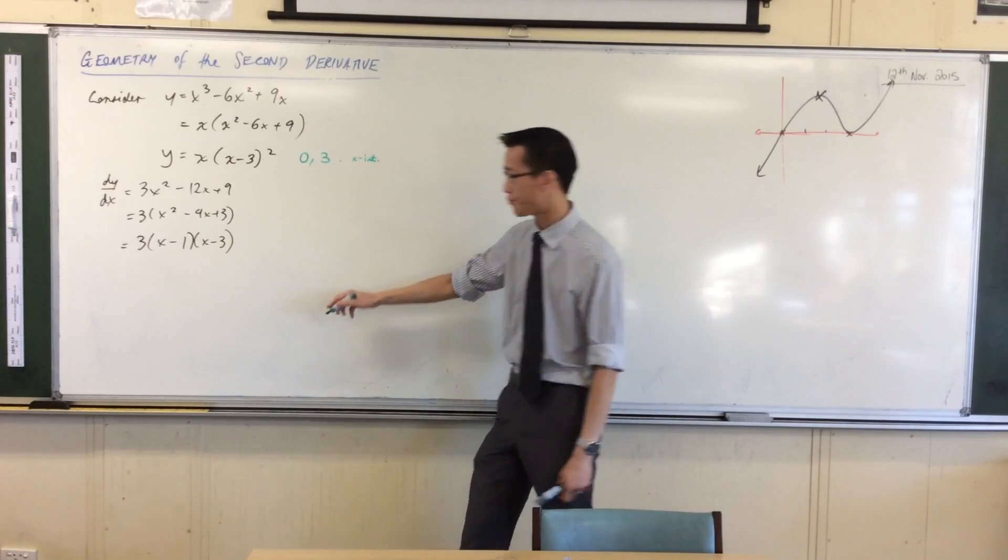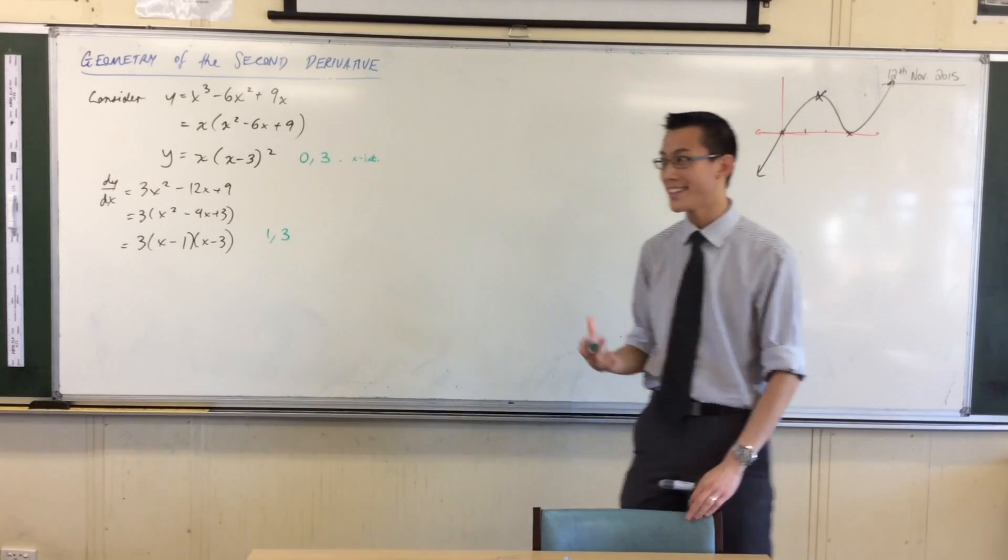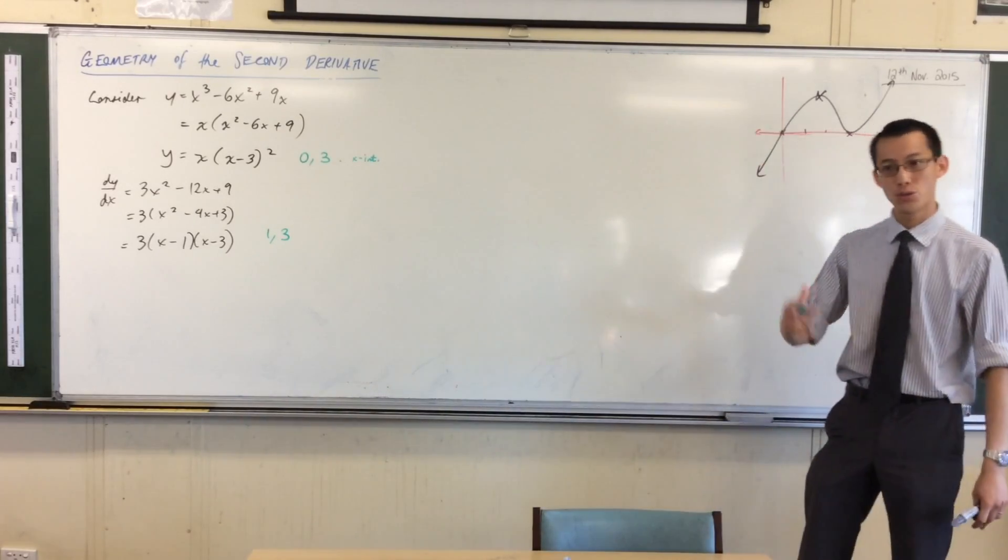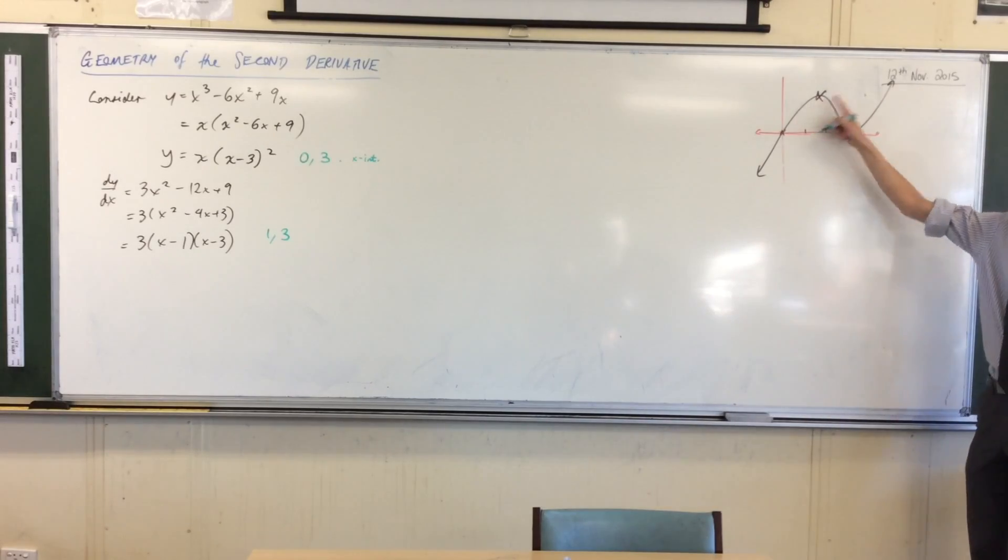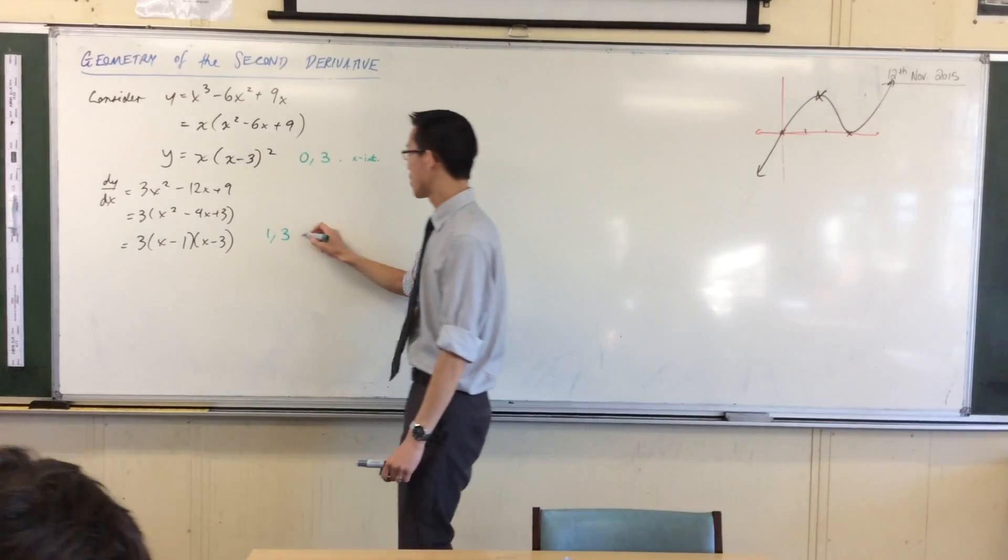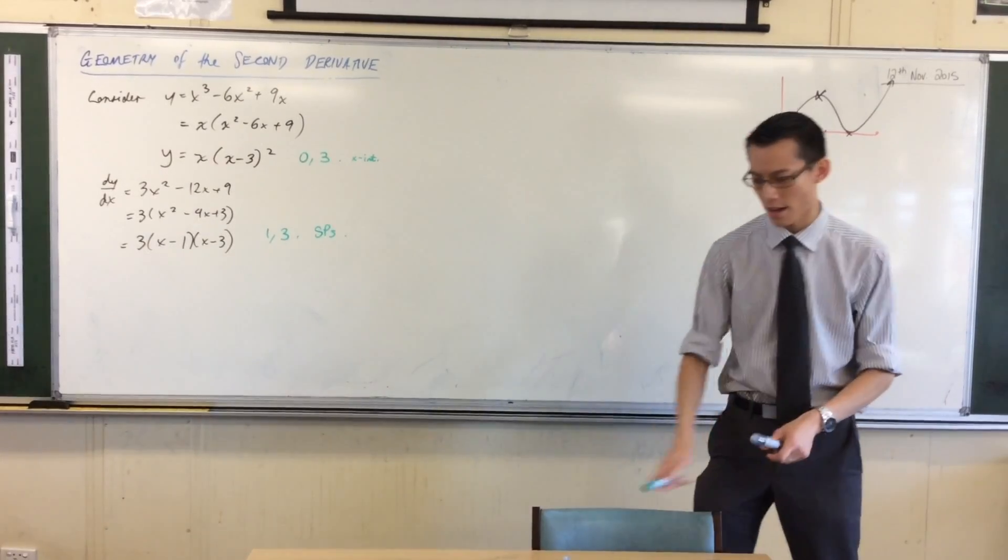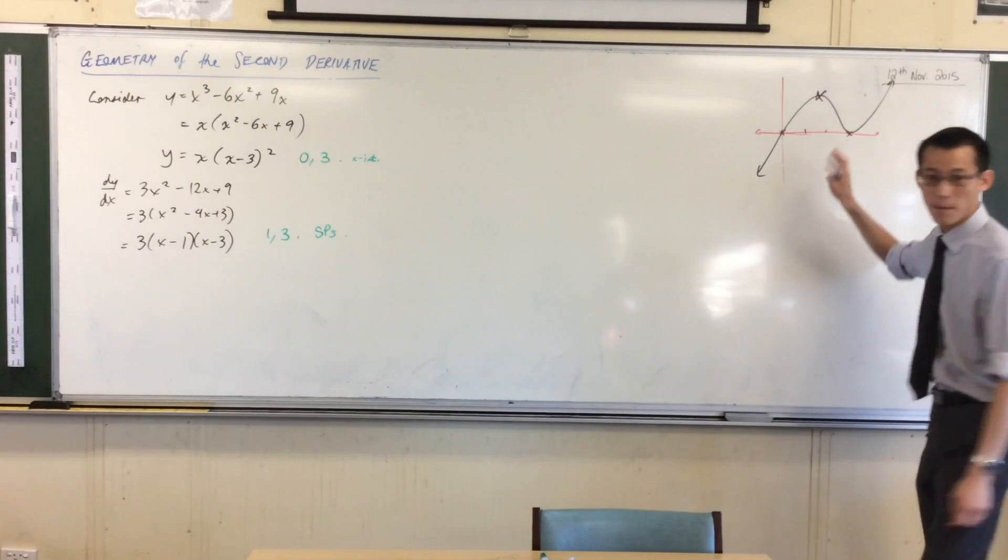This has different zeros - well, one of them is the same. What are the zeros of this guy? One and three. Now these don't correspond to intercepts but to stationary points. This is where the first derivative is zero. So these are my stationary points.